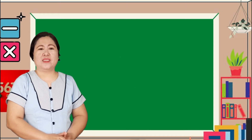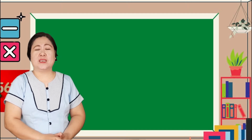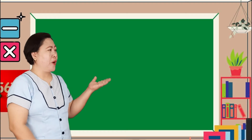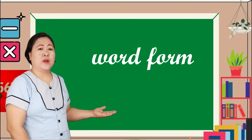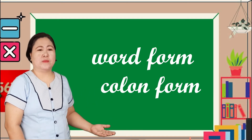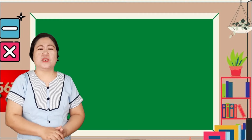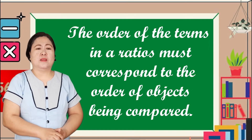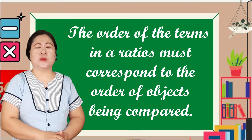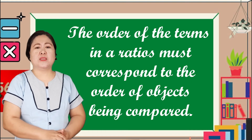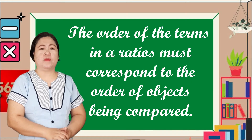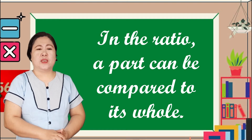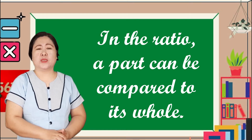You can write the ratio of A and B in three ways: it can be in word form, colon form, and fraction form. The order in which ratios are expressed is very important. The order of the terms in a ratio must correspond to the order of objects being compared. In a ratio, a part can be compared to its whole.